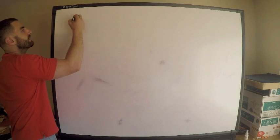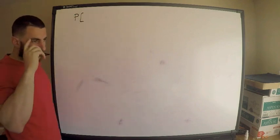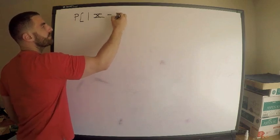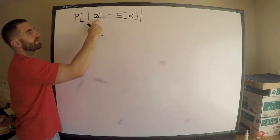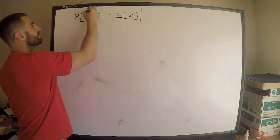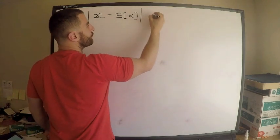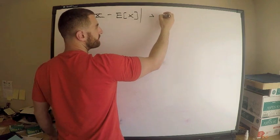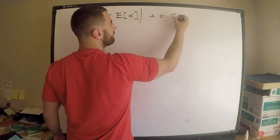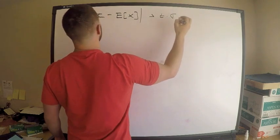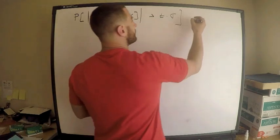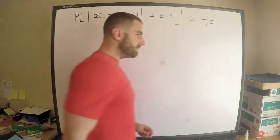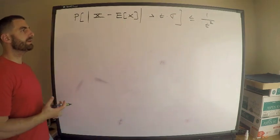It's a little bit tricky to remember, but it's the probability that the random variable's distance away from the mean — the expected value of x — so the absolute value, which you can think of as the distance from the random variable to the mean, being greater than some number t times sigma, the standard deviation. This probability is bounded above by 1 over t squared.